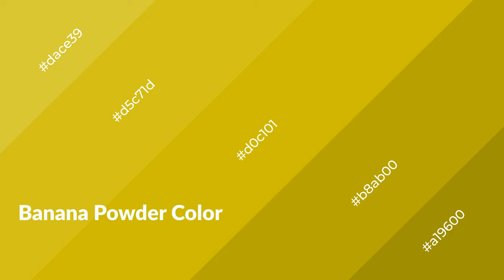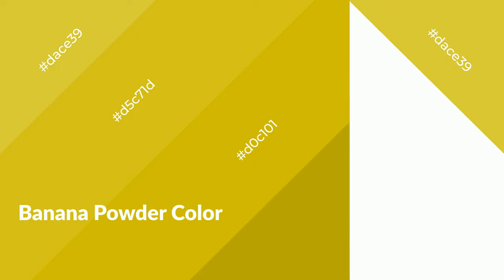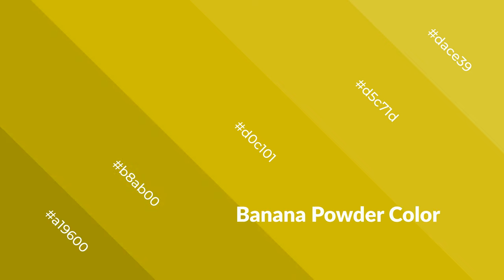Banana powder is a warm color and it emits cozier and active emotions. Warm colors are symbols of warmth, fire, heat, and sunshine. It also evokes joy, passion, love, and even anger. You can see warm colors used in restaurants and gyms.